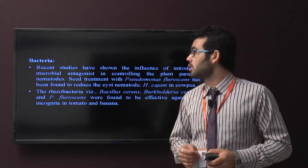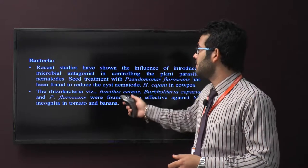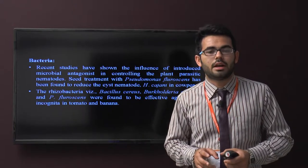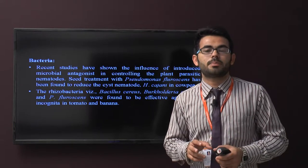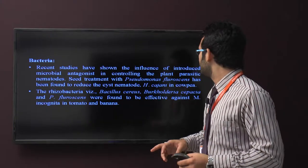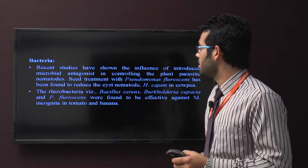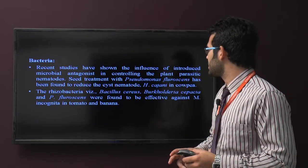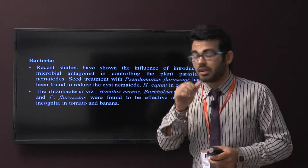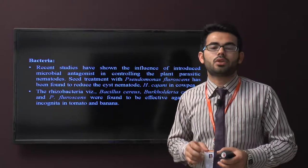Some bacteria are used for controlling harmful nematodes. Recent studies have shown the influence of introduced microbial antagonists in controlling plant parasitic nematodes. Seed treatment with Pseudomonas fluorescens has been found to reduce cyst nematodes. Rhizobacteria like Bacillus cereus and Burkholderia cepacia were found to control the effects of Meloidogyne incognita in tomato and banana.